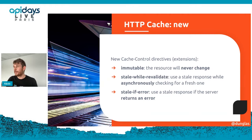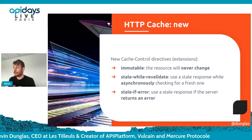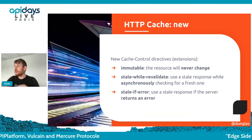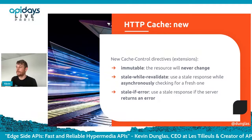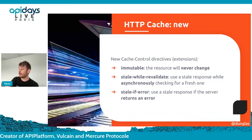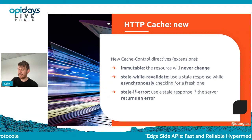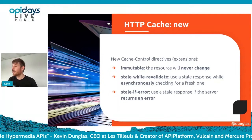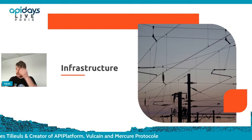This means you serve sometimes stale data to the user, but instantly — your app will be very fast — and in the background it will be refreshed, so the next user will have a newer version. There is also the 'stale-if-error' Cache-Control directive, which allows the cache to send stale data to the user if the server is in error. This is a way to make your API more reliable because even if the application server is down, you can still send stale data.